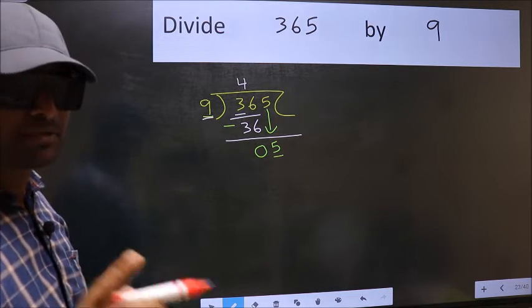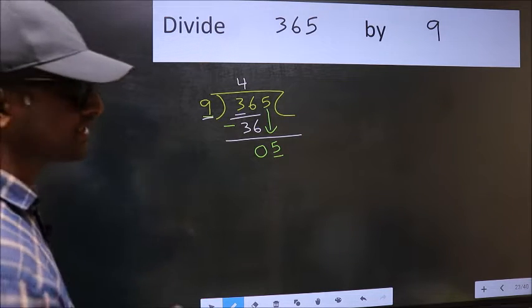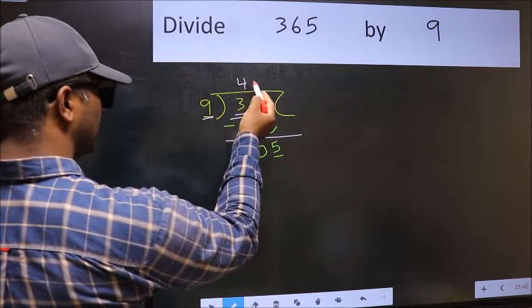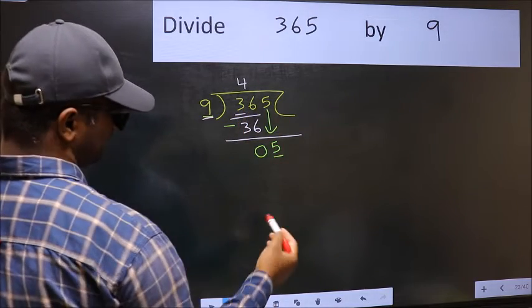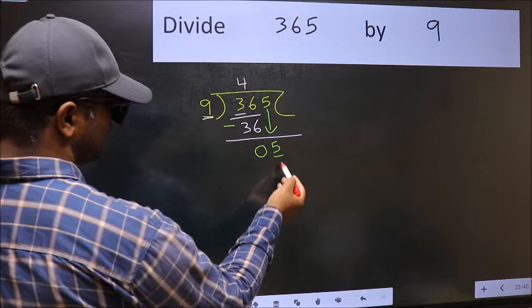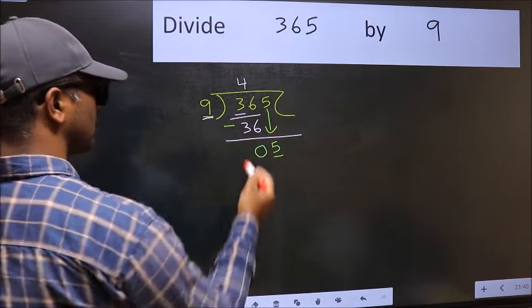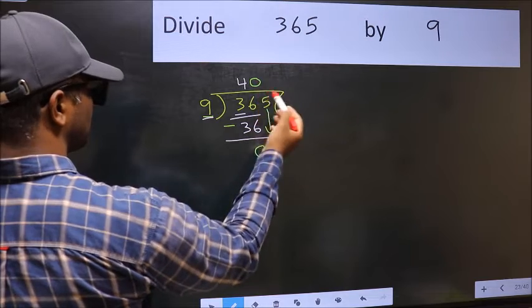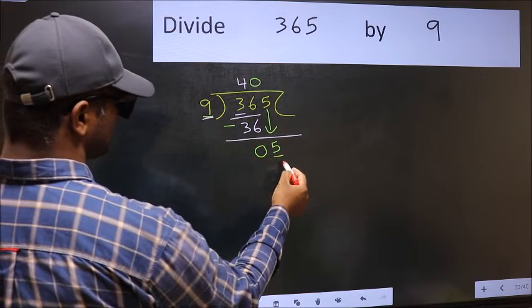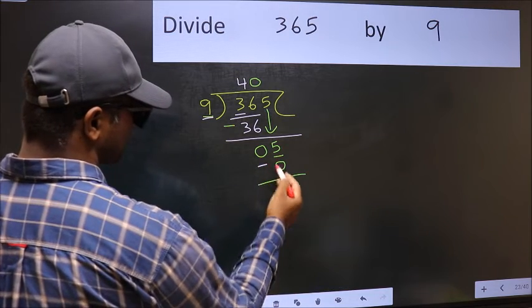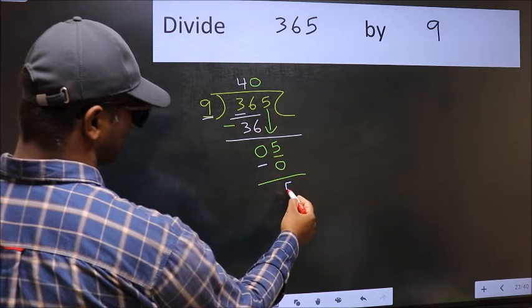Instead, what you should do is, which number should we take here? If I take 1, we will get 9, but 9 is larger than 5. So what we should do is take 0. So 9 into 0 is 0. Now you should subtract. 5 minus 0 is 5.